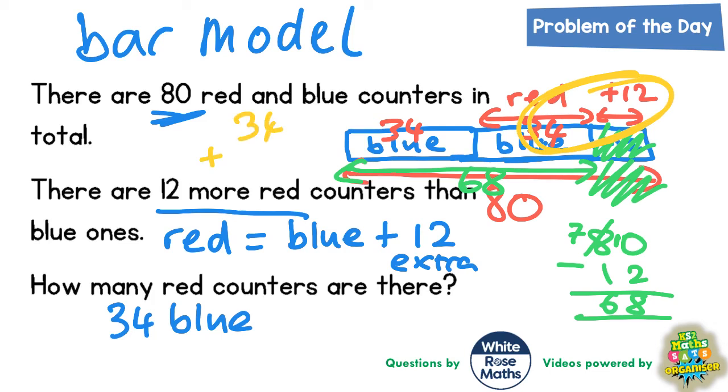So 34 plus the extra 12. If you work it out 34 plus 12 you can probably do it in your head. 4 plus 2 is 6, 3 plus 1 is 4. So it would be 46. We would have 46 red counters.